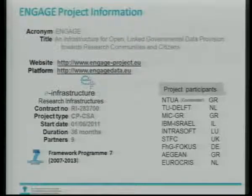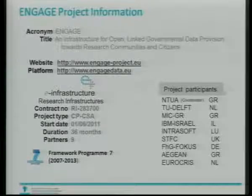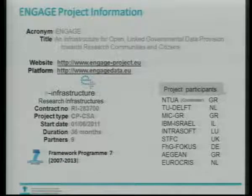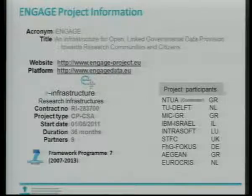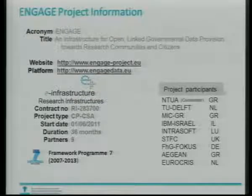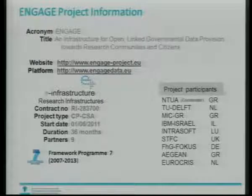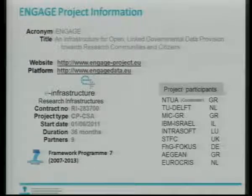A very short overview of Engage: some factual data. It's a project of the Research Infrastructures Program of FP7. It aims to build an infrastructure for open, linked governmental data — both the 'open' and 'linked' terms are very significant there. It runs now for one and a half years and ends May 2014. The coordinator is the National Technical University of Athens. There's a range of partners from the academic and commercial sector, and Eurocris is also involved, mainly in the area of metadata specification and interoperability.